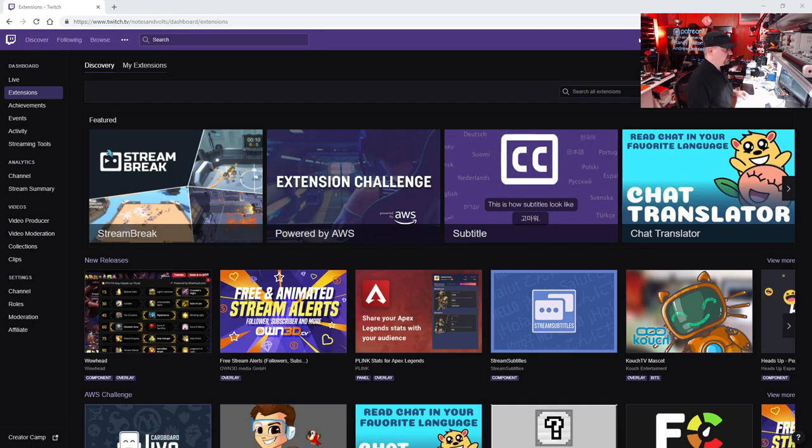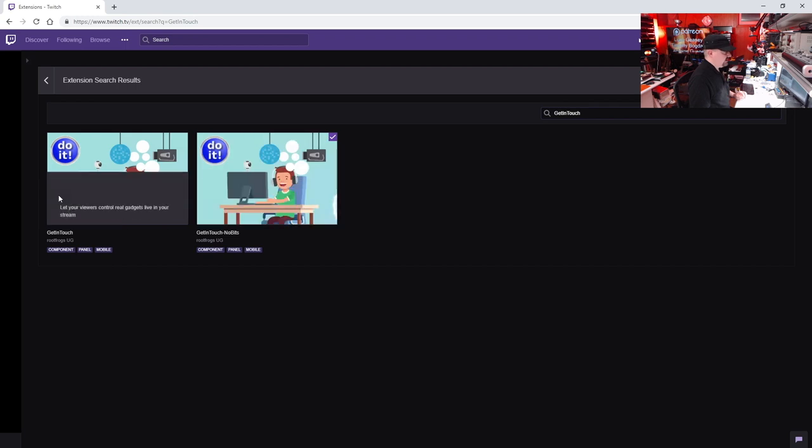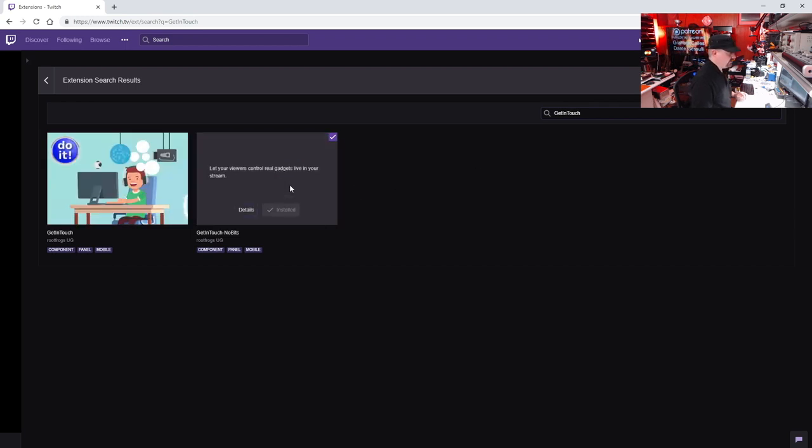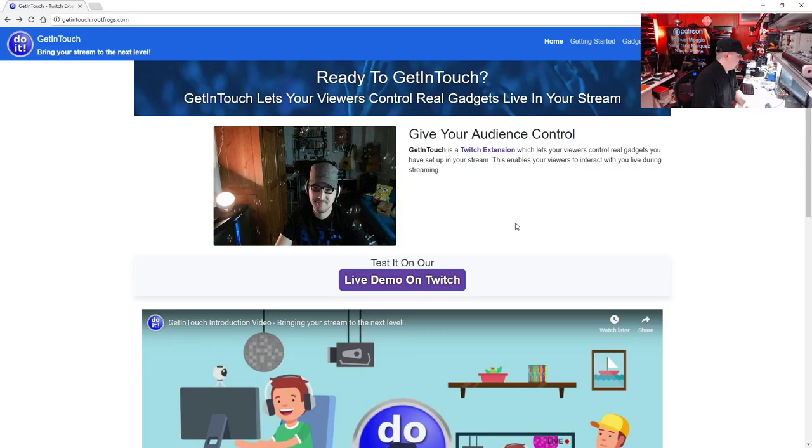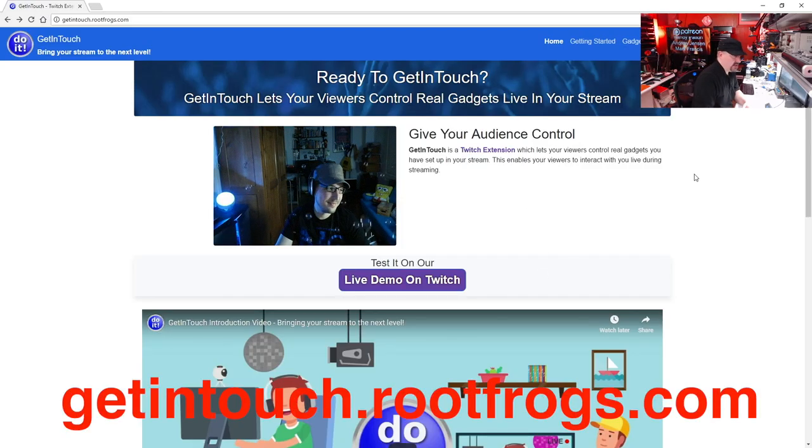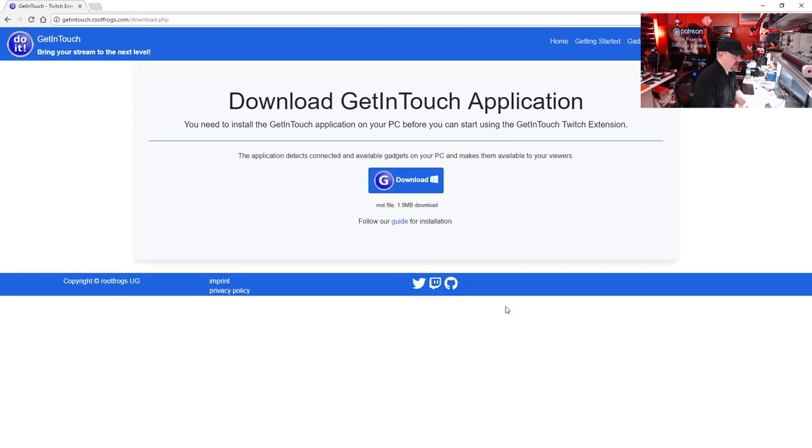So here's how you install the Get In Touch extension and connect it to your Twitch channel. So under your Dashboard Extensions tab, just do a search for Get In Touch. And here's the extension. There's two versions, one with no bits and one if you want to charge bits every time someone uses it. I use the free one, but just click Install. So next, go to the Get In Touch website and click Download. And then download and install the PC app.